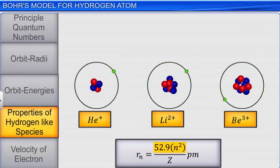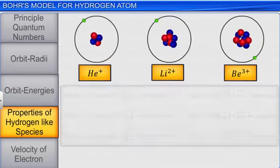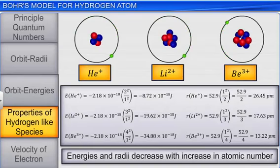From the orbit energies and radii equations of hydrogen-like ions, it can be deduced that with increase in Z, the value of energy becomes more negative and the radius becomes smaller.